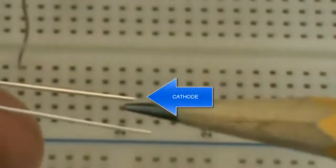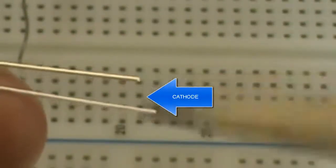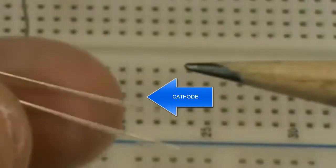Another way to tell is that the shorter lead on the LED is sometimes the cathode. Now if you've already clipped these, there's no way to use that to your advantage to tell which side's cathode or anode.